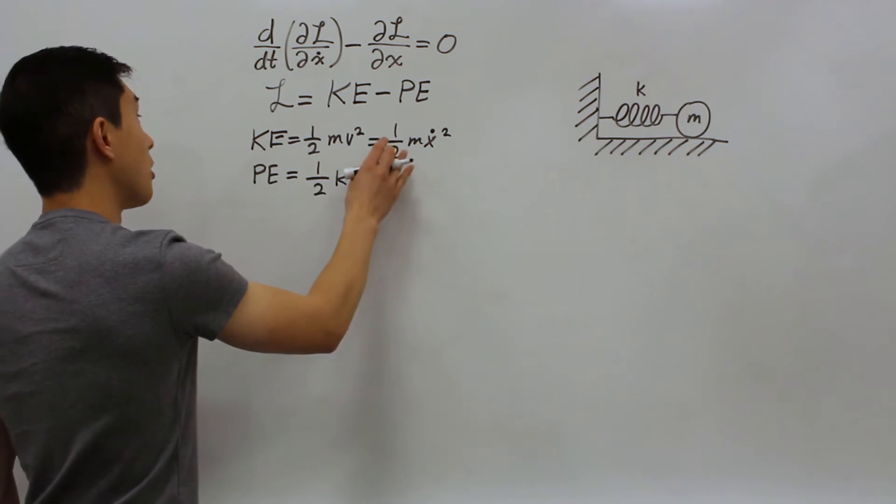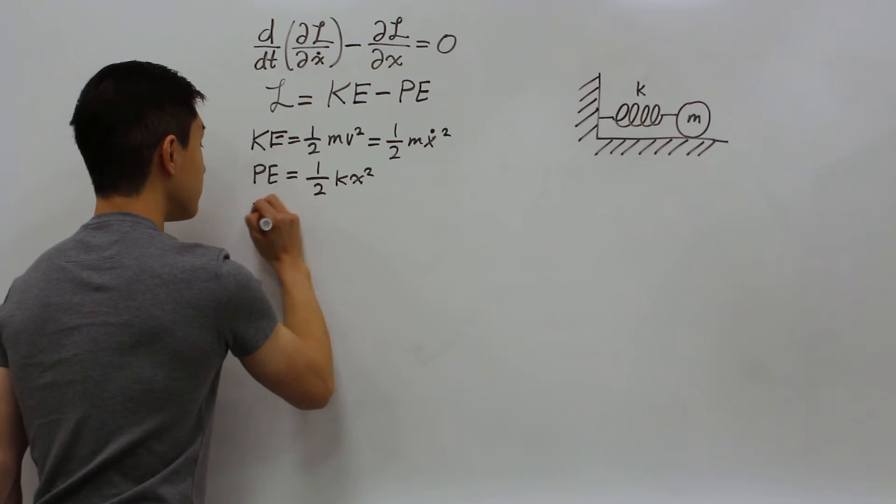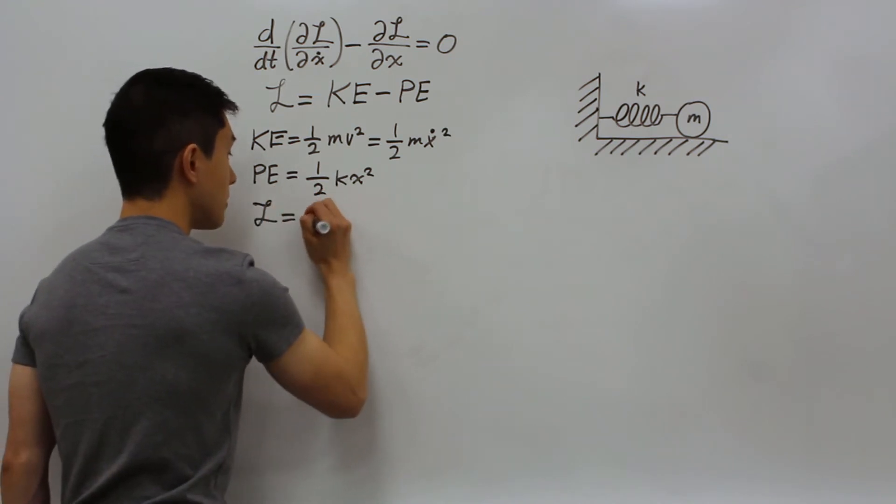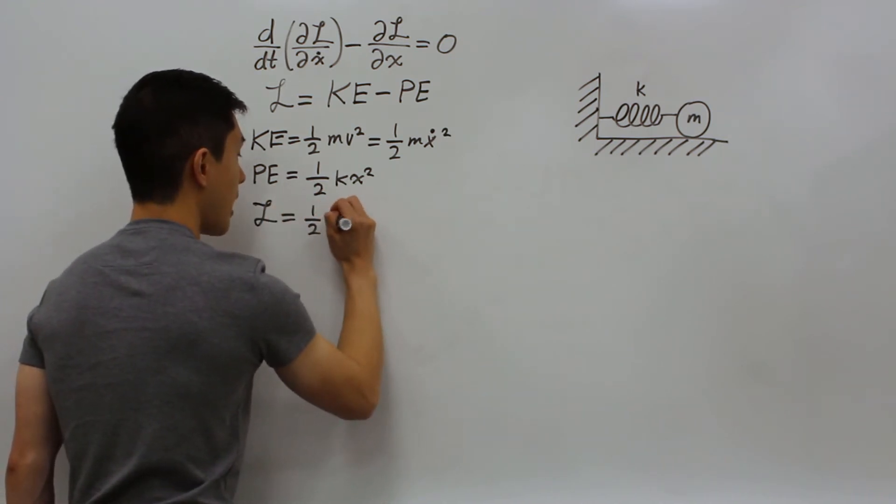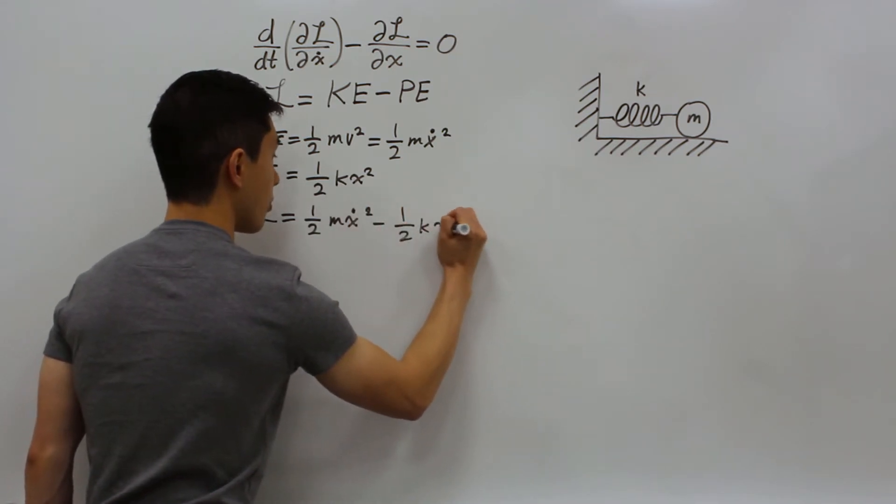Next, once we know the Lagrangian, which is just kinetic energy minus potential energy, we can write that down. So the Lagrangian is 1 half mx dot squared minus 1 half kx squared.